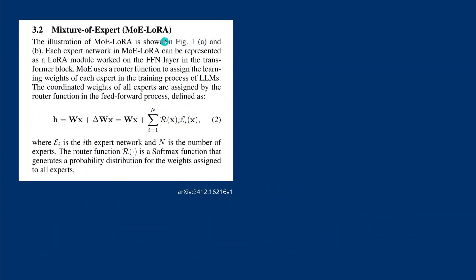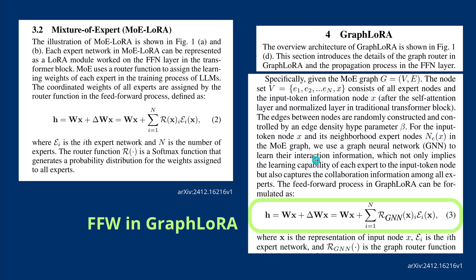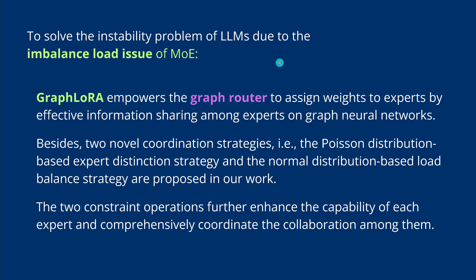In a classical Mixture of Expert case, the expert assignment by the router function in the feed-forward process was simple, and the router function in the simplest case is a softmax function that generates a probability distribution for the weights assigned to all experts. With GraphLora, this is different — we have a neural network itself. The feed-forward process and GraphLora can be formulated with a graph router function via a graph neural network. This solves the instability problems in LLMs due to the imbalanced load issue of Mixture of Expert systems. GraphLora empowers the graph router to assign weights to experts by effective information sharing among those experts on graph neural networks.